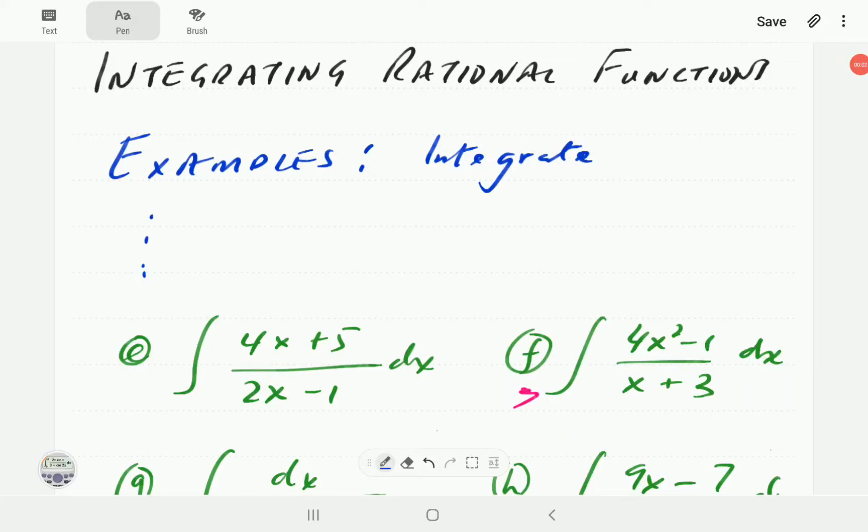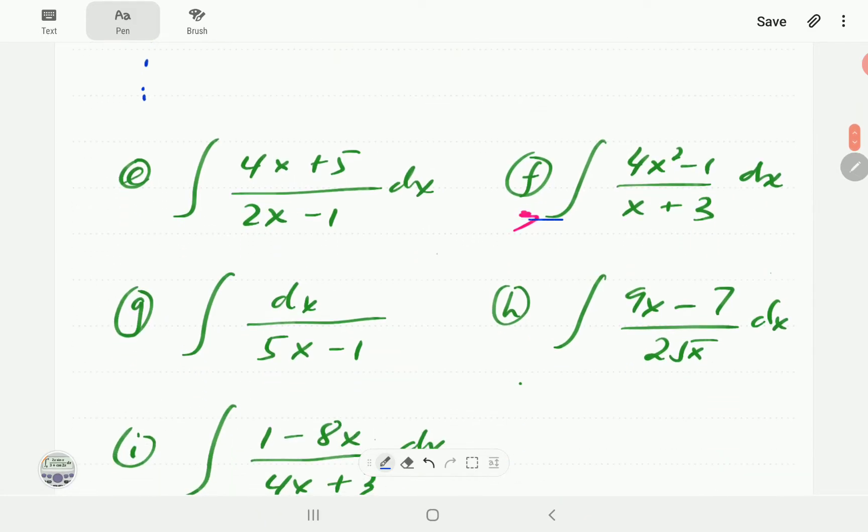This video is a continuation of a video on integrating rational functions. In that example we explained a few ideas and then we started doing examples from part a up to part e. If you are watching this video we strongly recommend that you start with that part one. Here we're going to go on and work example number f, g, h and i.